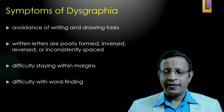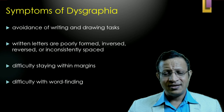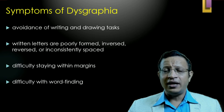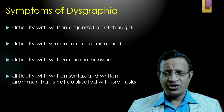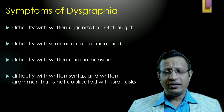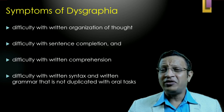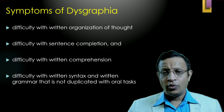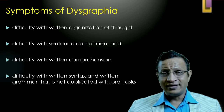Other signs include avoiding writing or drawing tasks, poorly formed or inconsistently spaced letters, difficulty staying within the margins, difficulty with word finding, difficulty forming organized and consistent thoughts, difficulty with sentence completion, difficulty with written comprehension, and difficulty with written syntax and grammar — which is not seen in oral tasks. Many a time, the child cannot read what it has itself written, which is a classical sign of dysgraphia.